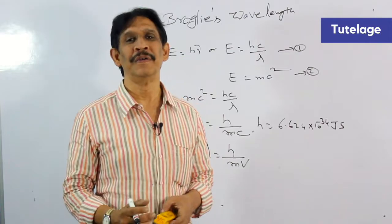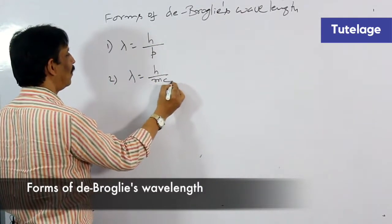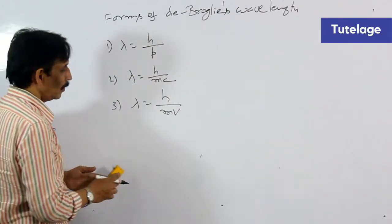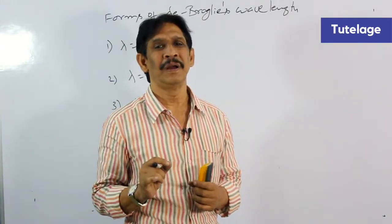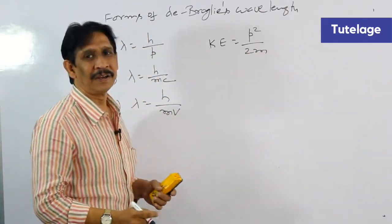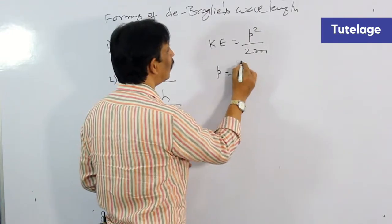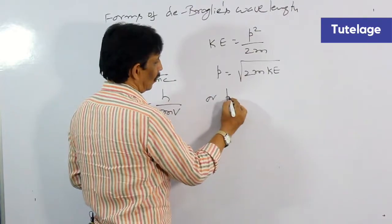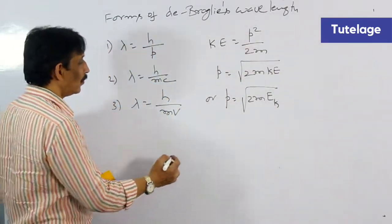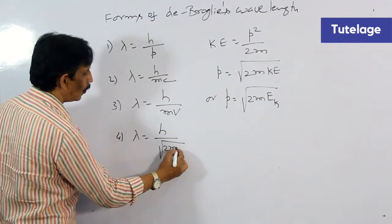Now let us discuss the different forms of the De Broglie wavelength. First, lambda is equal to h by p; lambda is equal to h by mc; lambda is equal to h by mv for a particle of mass m having velocity v. The relation between linear momentum and kinetic energy is k equals p squared by 2m, where k is the kinetic energy and p is the linear momentum — the product of mass and velocity. So p equals the square root of 2m·Ek, and therefore lambda is equal to h by the square root of 2m·Ek.